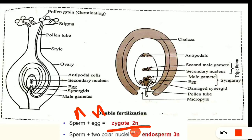Aur humaara sperm — jo second male gamete hai — woh bhi haploid hai. Doosra second male gamete, aur jo do polar nuclei hain, woh bhi haploid haploid hain, lekin do hain. Toh humhe jo primary endosperm nucleus, ya phir jo humaara endosperm hoga, woh humko kya milega — triploid milega. Isliye isko triple fusion bhi bolte hain, kyunki humko kya mil raha hai — teen nucleus mil raha hai — yahaan pe 2 polar nuclei hain aur ek male gamete, that is the second male gamete, ka fusion ho raha hai. Isliye is process ko triple fusion bolte hain.